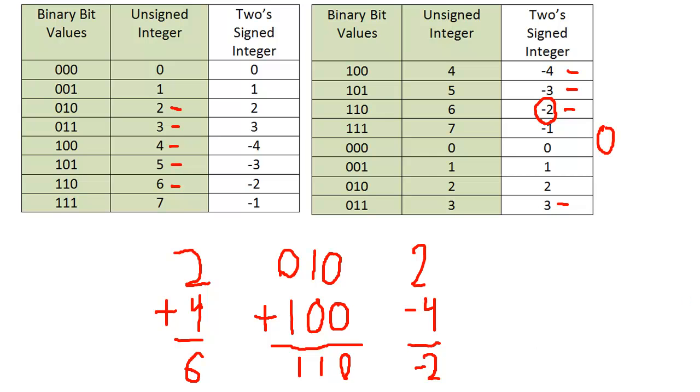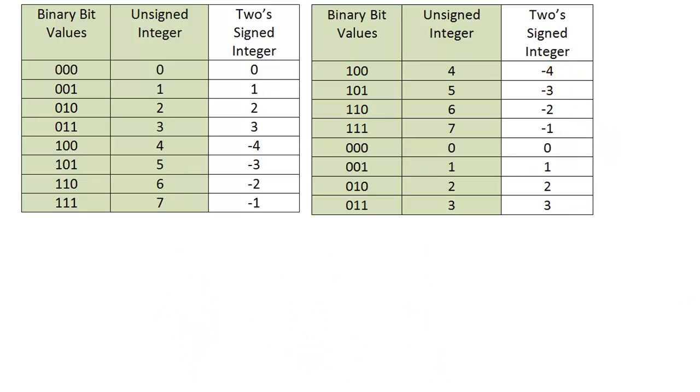Let's do another one. Let's do negative 1 plus 3. Let's first of all grab the binary values. So negative 1, two's complement over here, is 111. And then plus 3, well 3 is 011.